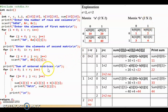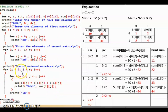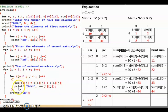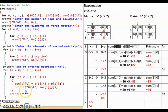Now we add the two matrices and store the result in matrix 'sum'. A nested for loop is used again — the outer loop from i=0 until i less than r, the inner loop from j=0 until j less than c. For each position, sum[i][j] = a[i][j] + b[i][j], and the result is printed. After that, we print a newline. Let us trace through this loop with our example.